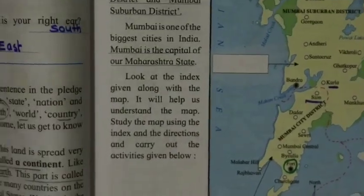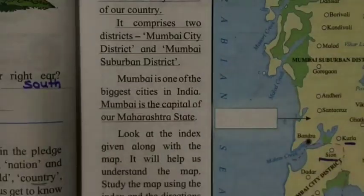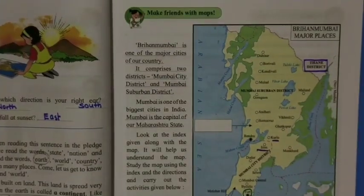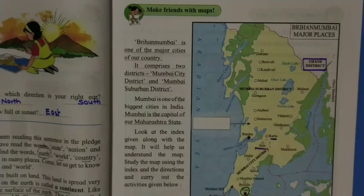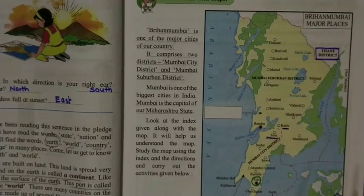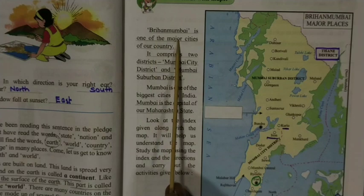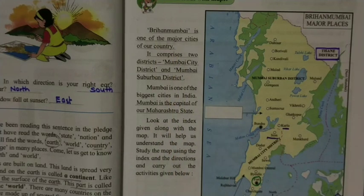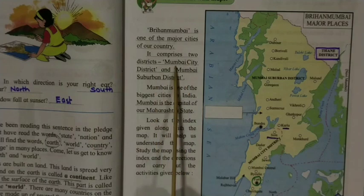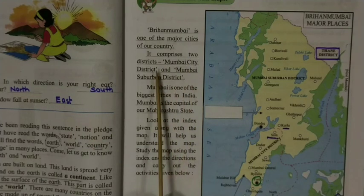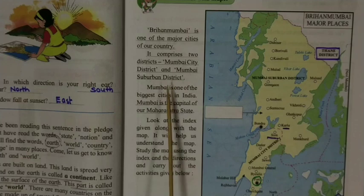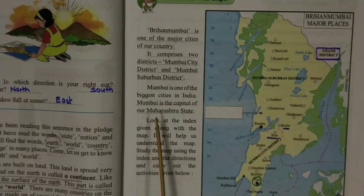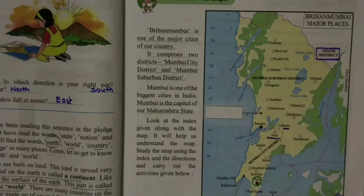Now let us see our first map — the map of Mumbai. Mumbai is also called Brihanmumbai. It is one of the biggest cities in India. Brihanmumbai comprises two small districts: the Mumbai City District and the Mumbai Suburban District. Mumbai is the capital of Maharashtra.